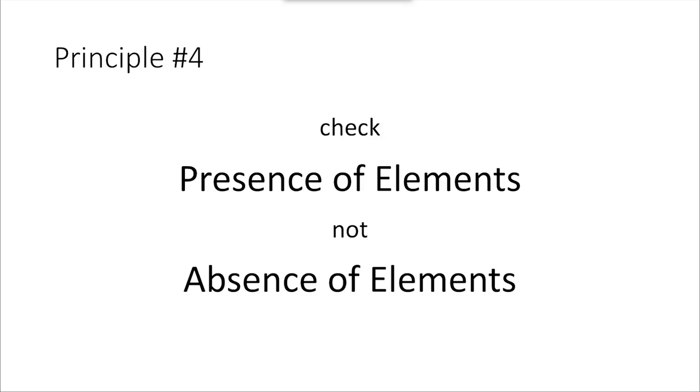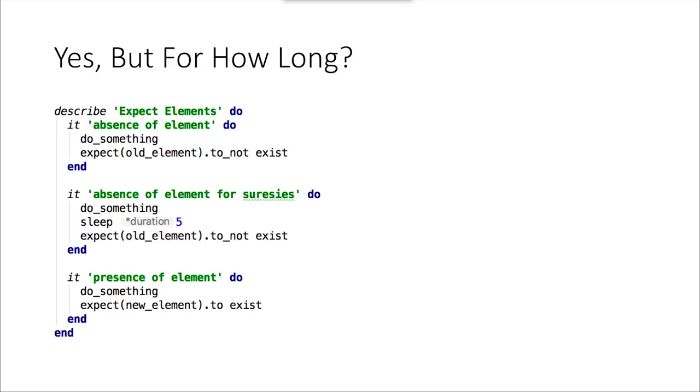A lot of people come up with the use case of wanting to check that an element isn't there. Let's check for the absence of an element — we expect this element not to exist. But what if it exists right now and was going to go away in a second? You end up having to put in some kind of hard-coded sleep to make sure it's not there. That's not ideal. You always want to find something you can positively identify as present, rather than looking for the absence of something. In the UI, if you can find something to positively locate, it's much better than trying to confirm that something is not there.